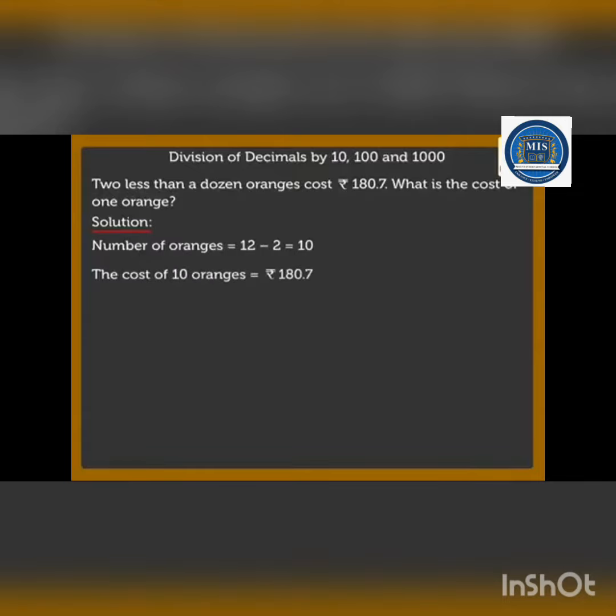Cost of 10 oranges, that is given already. So to find the cost of one orange, in that case we will divide by 10. So then what will be the cost of one orange? Yes, the cost of one orange is 18.07 rupees.